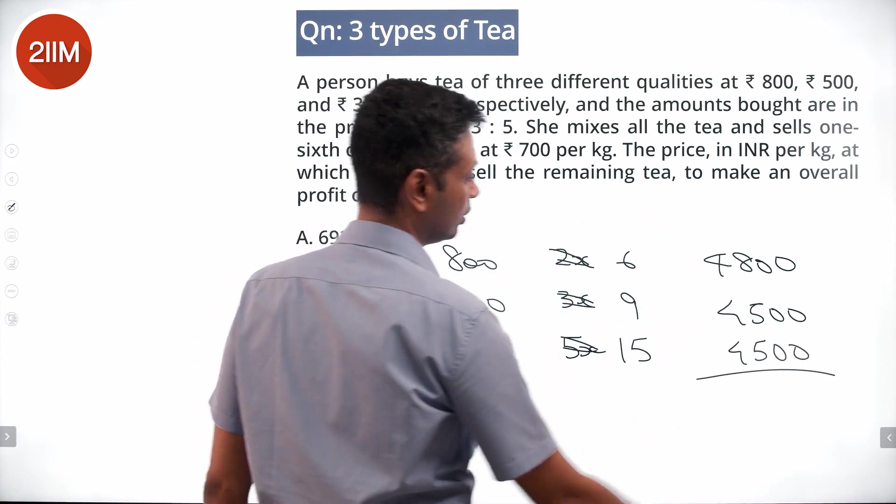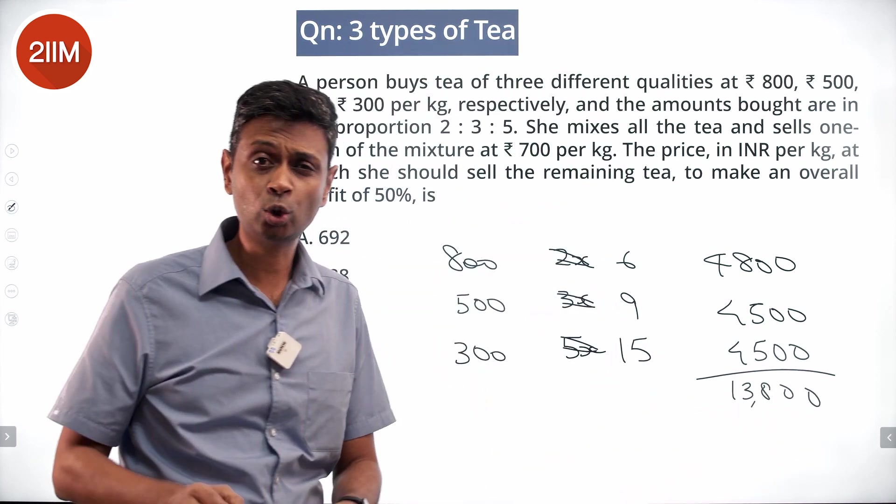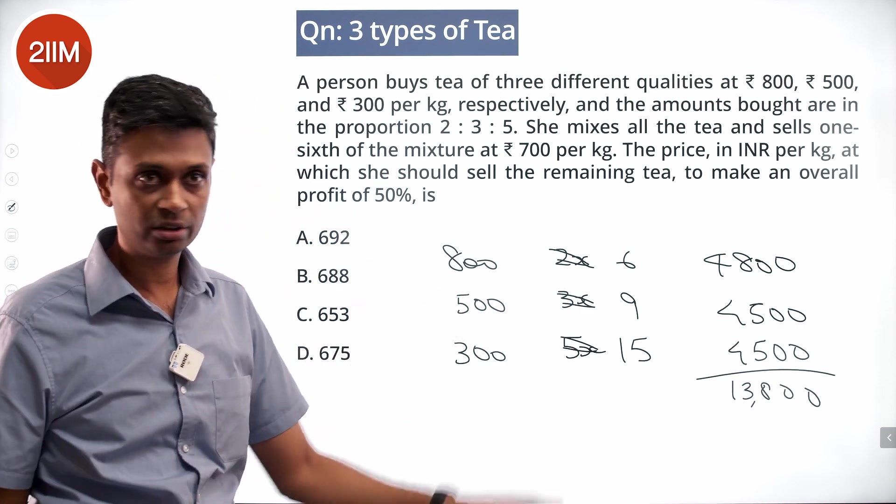The total cost price: 0, 0, 8, 1, 3, 8. 13,800 is the total cost price that she has.